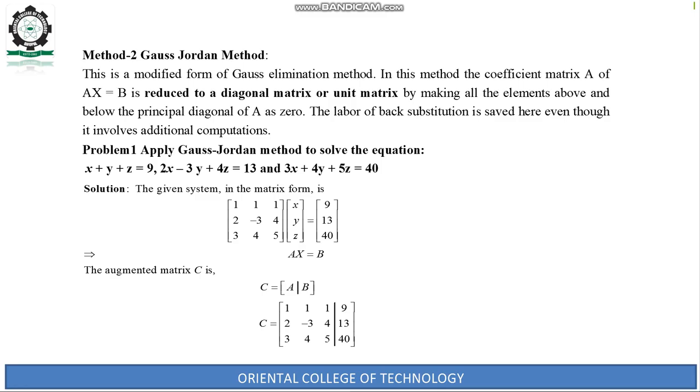Gauss-Jordan Method: This is a modified form of Gauss elimination method. The coefficient matrix A of Ax = B is reduced to a diagonal matrix or a unit matrix by making all elements above and below the principal diagonal of A zero. Problem 1: Apply Gauss-Jordan Method to solve the equation.